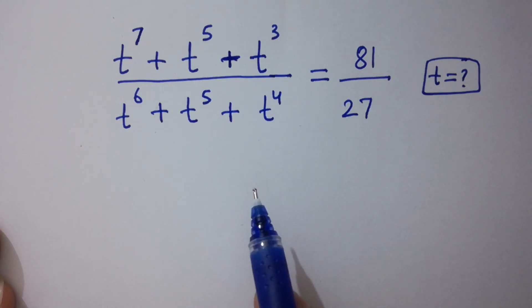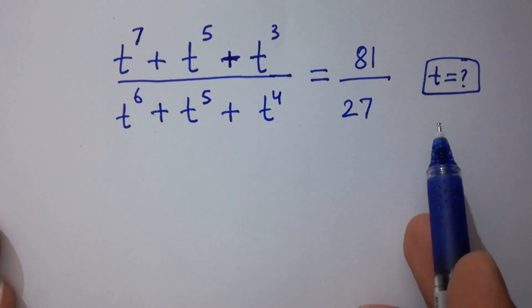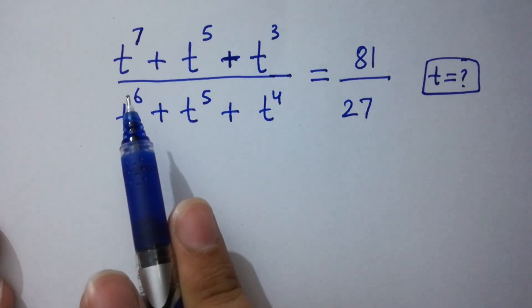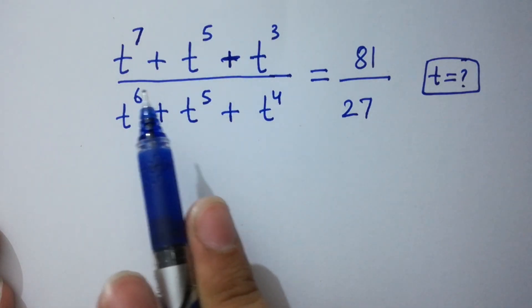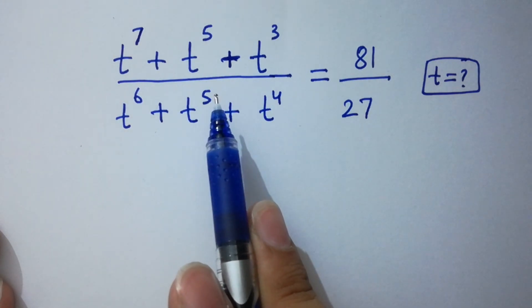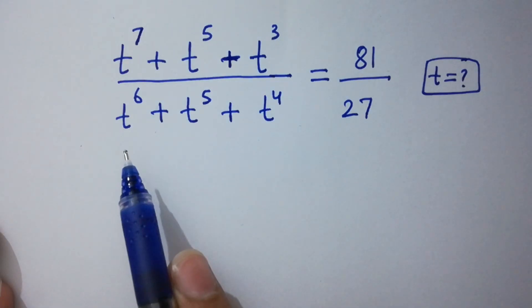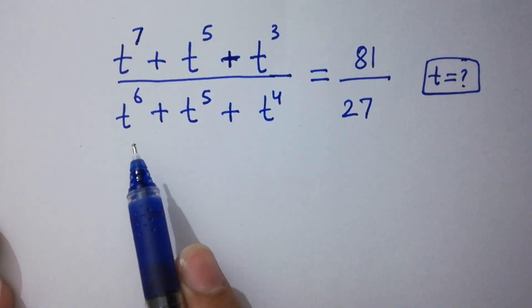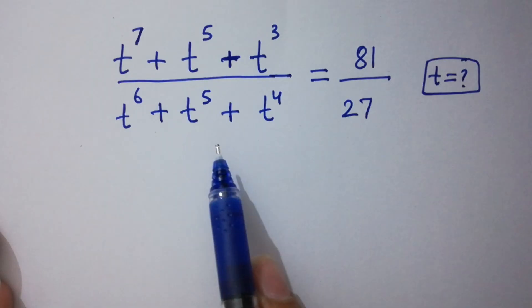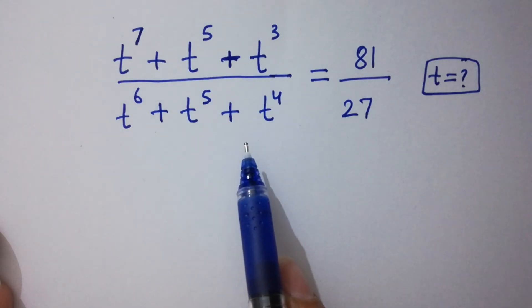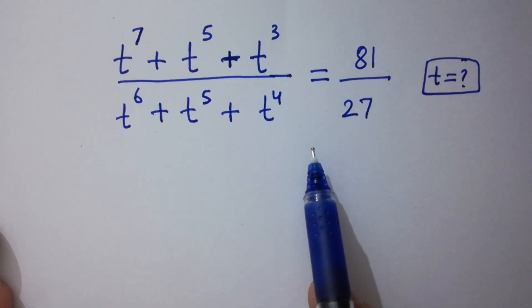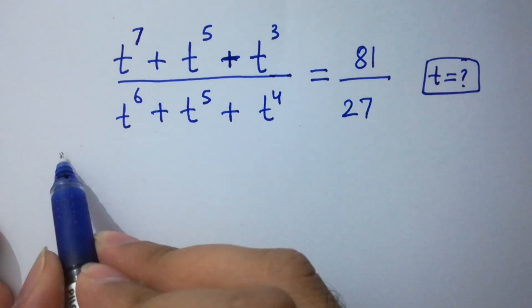Hello friends. Find the value of t if (t⁷ + t⁵ + t³) over (t⁶ + t⁵ + t⁴) equals 81 over 27. Let's have a solution.